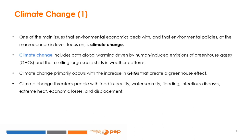Climate change includes both global warming, driven by human-induced emissions of greenhouse gases, and the resulting large-scale shifts in weather patterns. Though there have been previous periods of climatic change, since the mid-20th century, humans have had an unprecedented impact on Earth's climate system. Two main definitions of climate change can be used. The IPCC defines climate change as a change in the state of the climate that can be identified by changes in the mean and/or variability of its properties, and that persists for an extended period, typically decades or longer. It refers to any change in climate over time, whether due to natural variability or as a result of human activity.